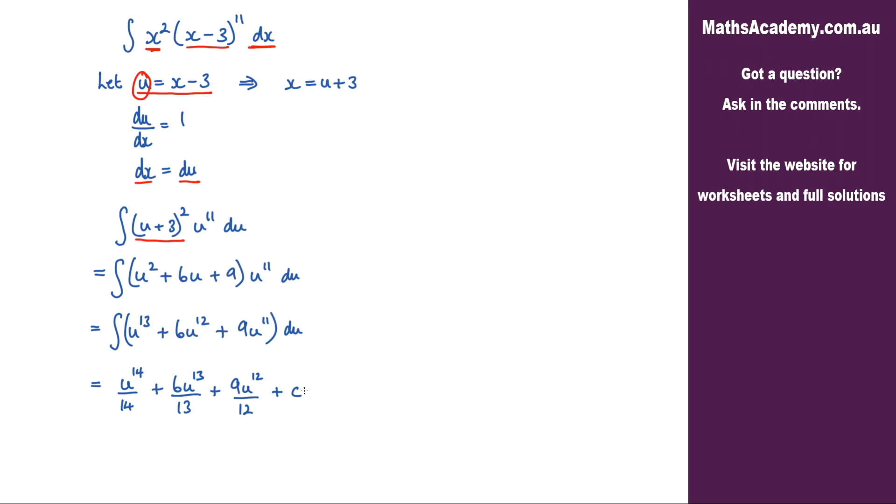Now the final step is to substitute back in for u, and u is x minus 3, so we're going to substitute that back in. So we'd have x minus 3 to the power of 14 over 14, plus 6 times x minus 3 to the power of 13 over 13.